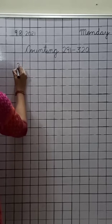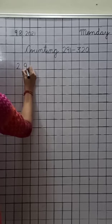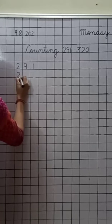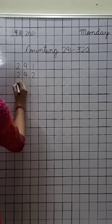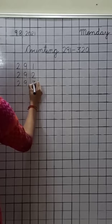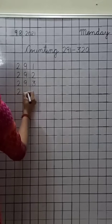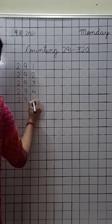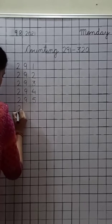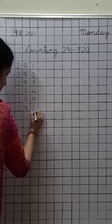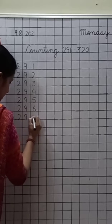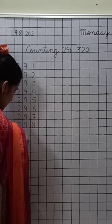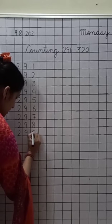Now we will start the counting from 291. Speak with me. 291, 292, 293, 294, 295, 296, 297, 298, 299.